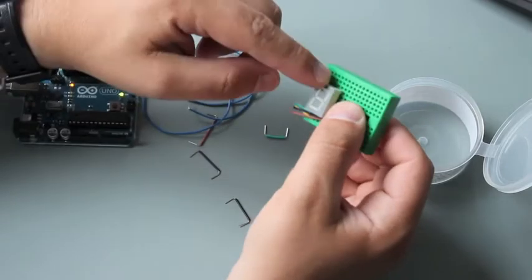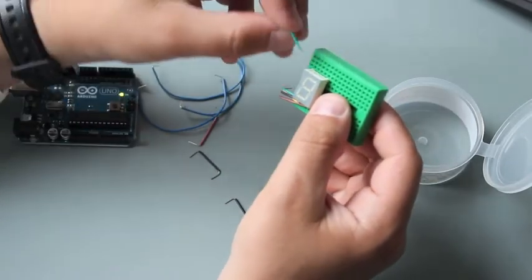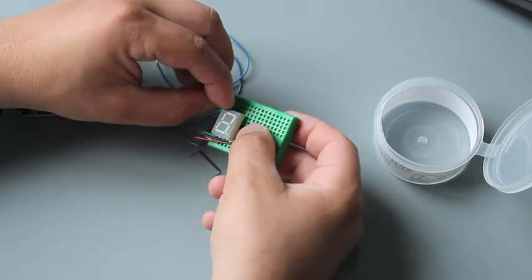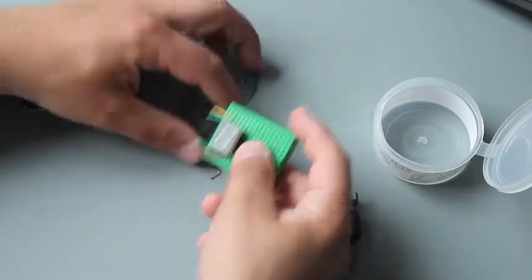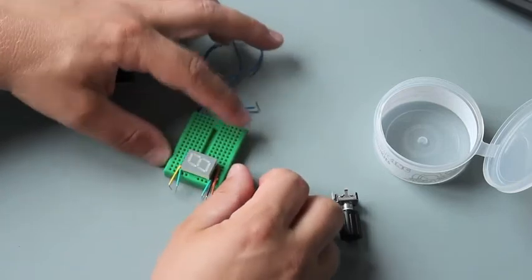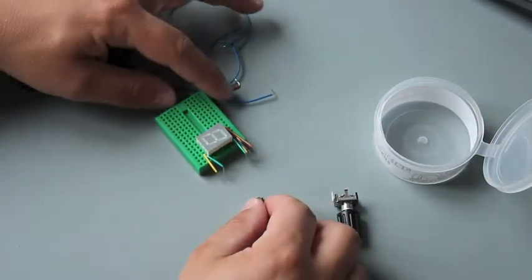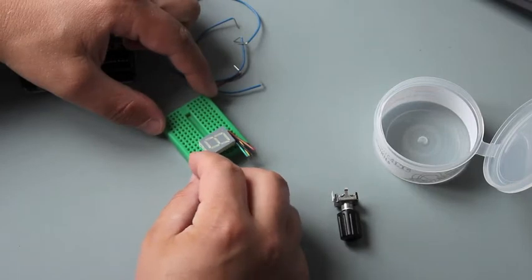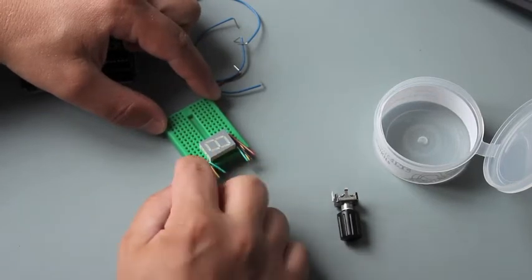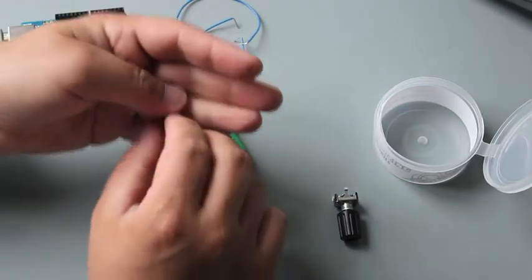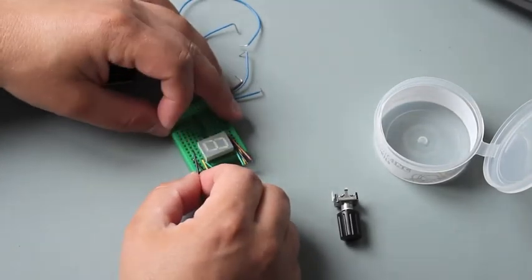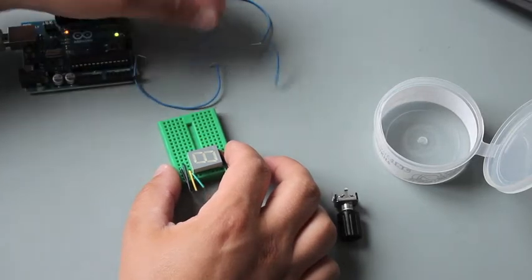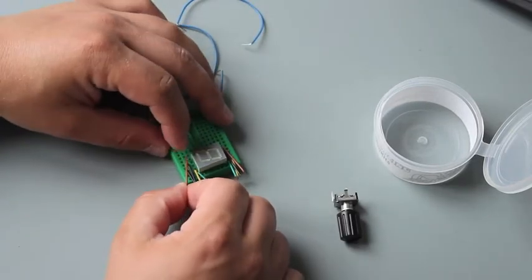On the upper side start again with the green one. Then the yellow one. I hope you can see that. Maybe I turn this around. And then place the black one in the middle here. Then the violet to here. And the brown one is the last.